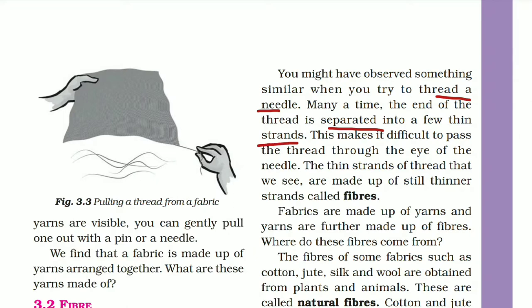When we take the thread, it seems that it separates and starts to split. This makes it difficult to pass the thread through the eye of the needle. The thin strands of the thread that we see are made up of still thinner strands called fiber. When we cut the thread it becomes yarn, and when we cut the yarn it becomes cloth.